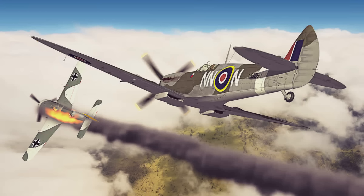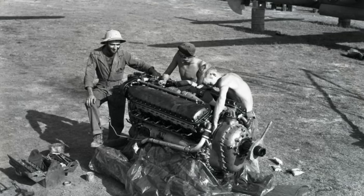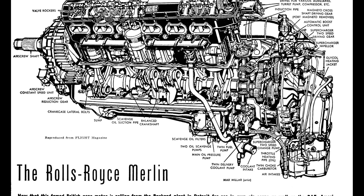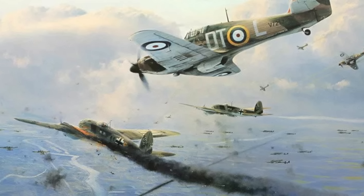Not quite true — the engines did need to be modified to handle the new fuel, but it was worth it. Converting from 87 to 100-octane fuel increased the RAF's Spitfires and Hurricanes' top speed by 25 to 34 miles per hour up to 10,000 feet. That's a battle-winning difference.